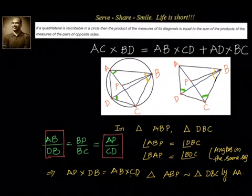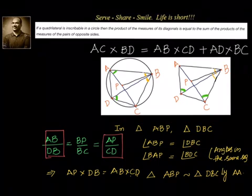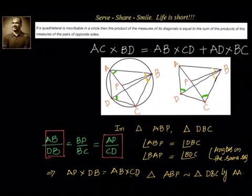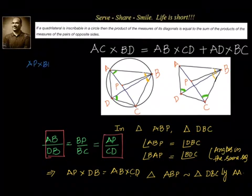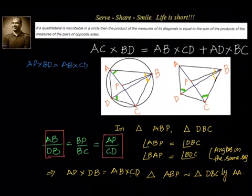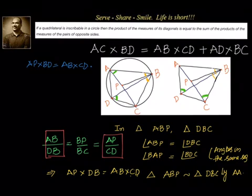Since AP × BD = AB × CD, and we also know that AP + PC = AC, we obviously need to next obtain PC × BD from the second pair of similar triangles, so that together we can build up AC × BD.